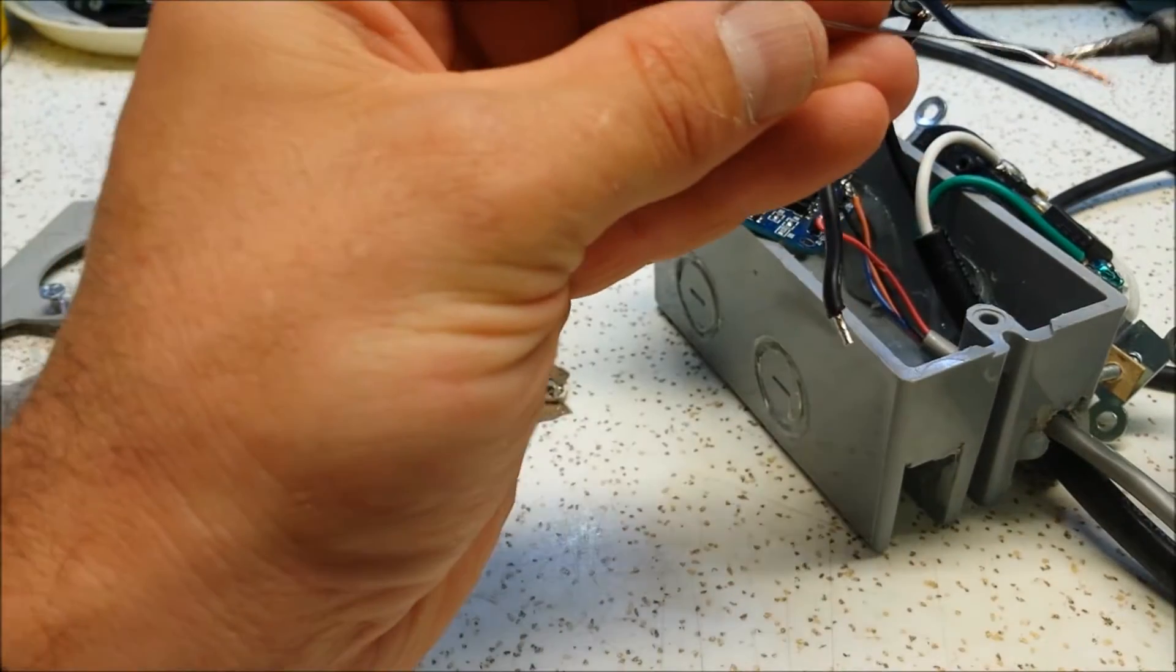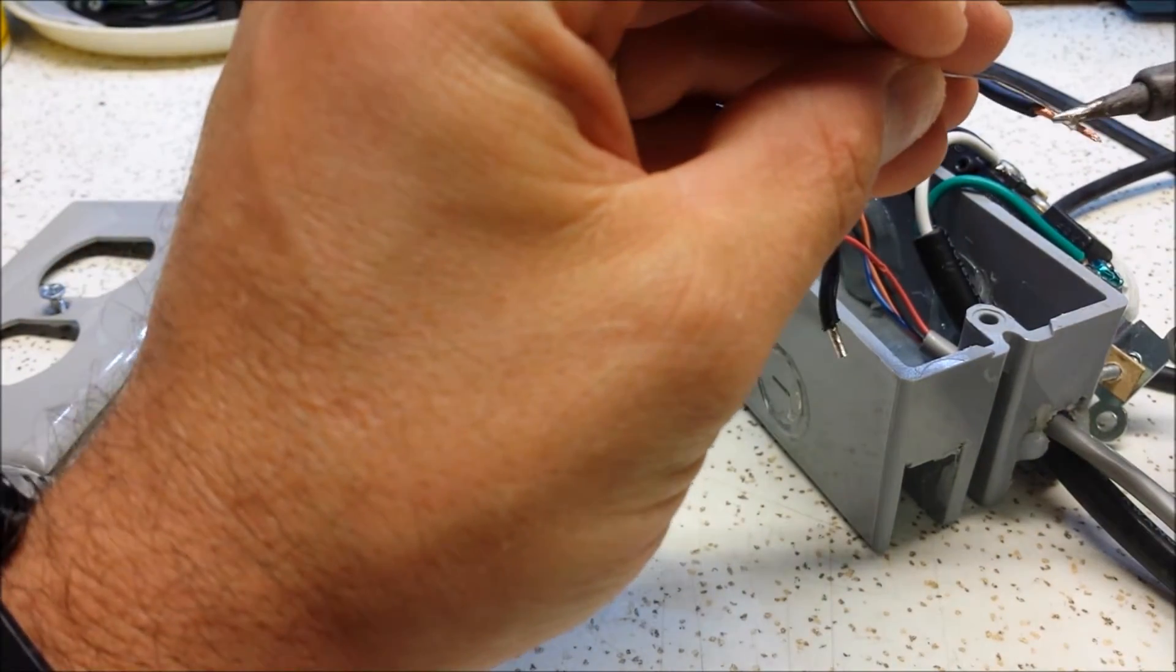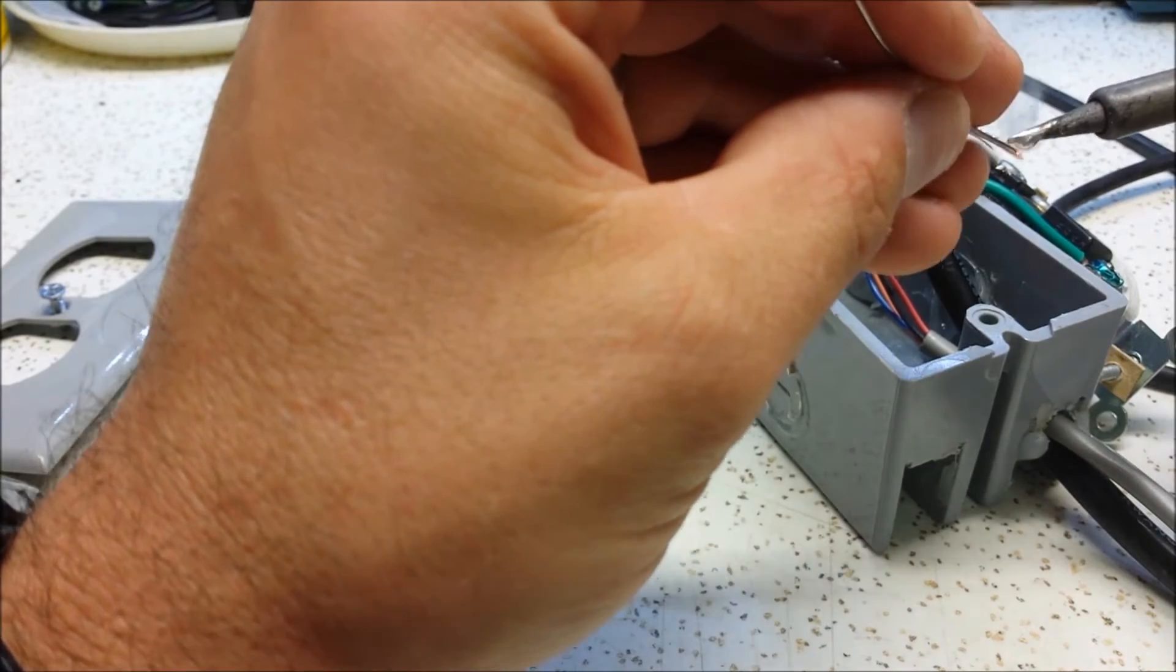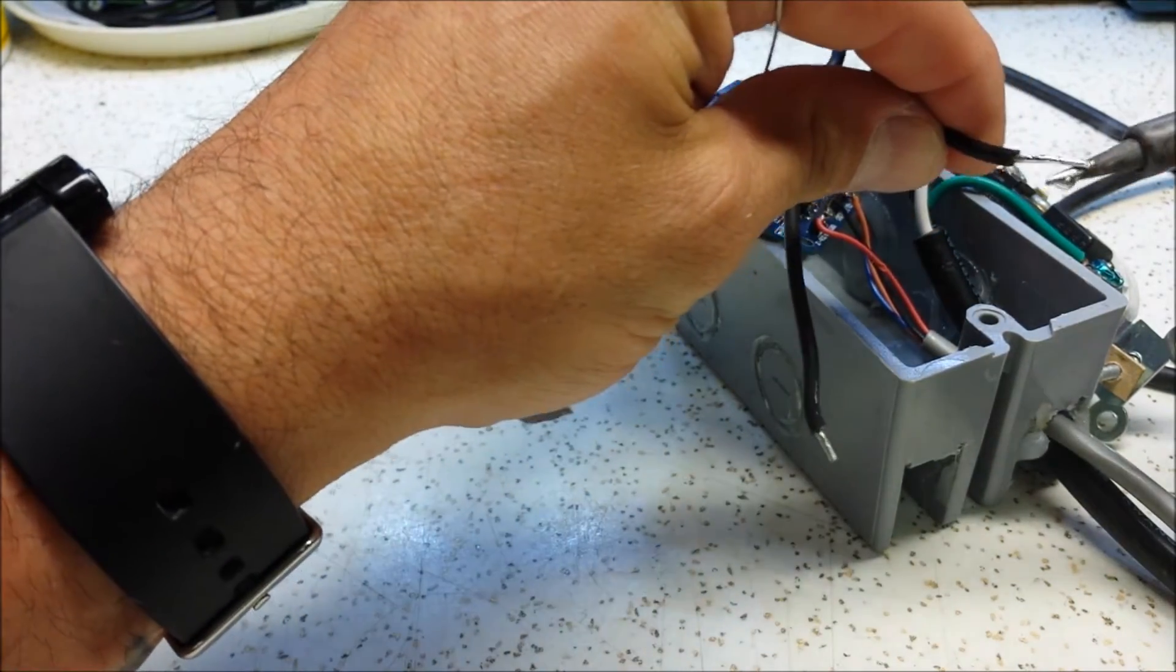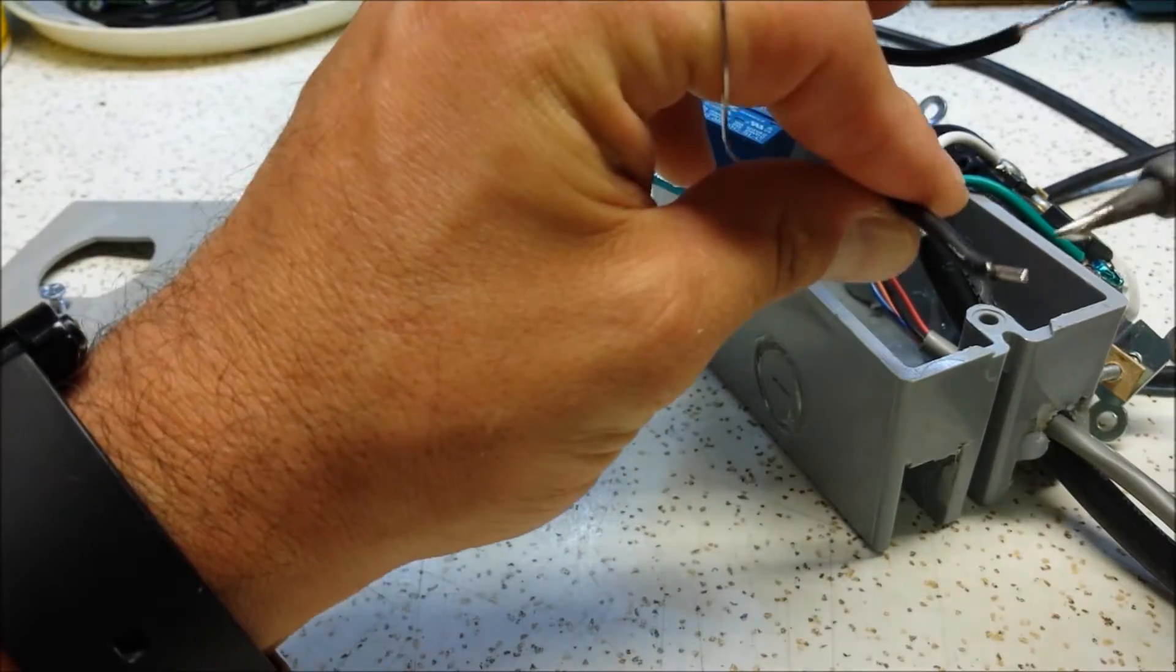Now I always tin these wires. Just add a little solder to them. So that way when you tighten the screw down, it doesn't displace the stranded wires. See, this one's already done.